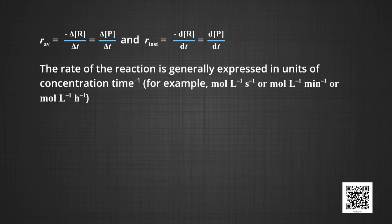The rate of the reaction is generally expressed in units of concentration per time — for example, moles per liter per second, moles per liter per minute, or moles per liter per hour. However, in gaseous reactions, when the concentration of the gases is expressed in terms of their partial pressures, the units of the rate will be atmospheres per second. There are a number of factors that affect the rate of the reaction, which will be discussed in the next module. Dear students, I hope the concepts of average rate and instantaneous rate are now clear, including how to calculate numericals based on the formula, and the significance of the negative sign before reactants and the positive sign before products. Thank you.